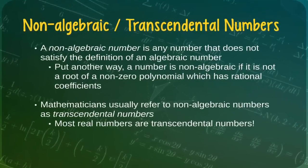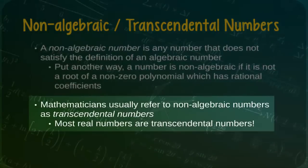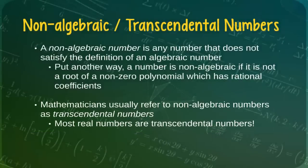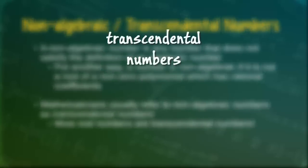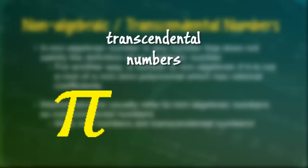Put simply, a non-algebraic number is any number that does not satisfy the definition of an algebraic number. That is, a number is non-algebraic if it is not a root of a non-zero polynomial equation with rational coefficients. It is important to note that mathematicians usually refer to non-algebraic numbers as transcendental numbers. It is also important to note that the vast majority of all real numbers are actually transcendental numbers. Perhaps the most popular and well-known examples of transcendental numbers include pi and the mathematical constant e, which is the base of the natural logarithm.